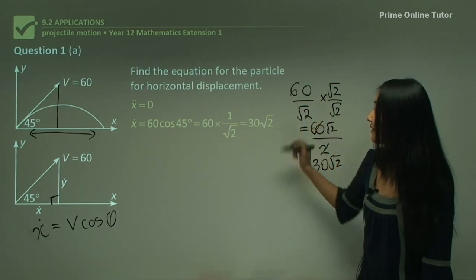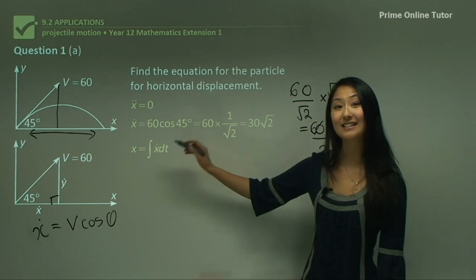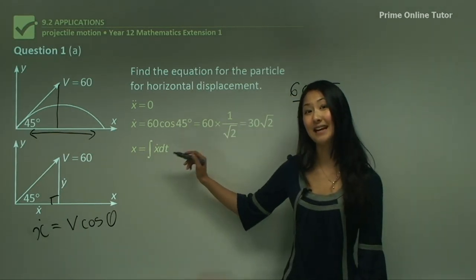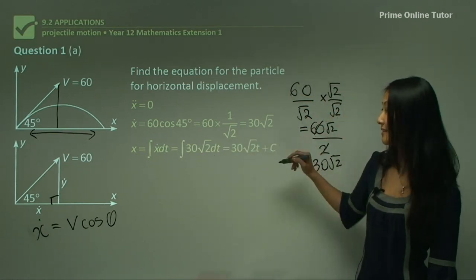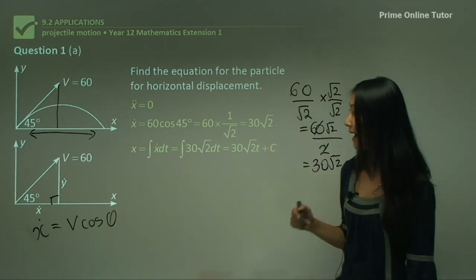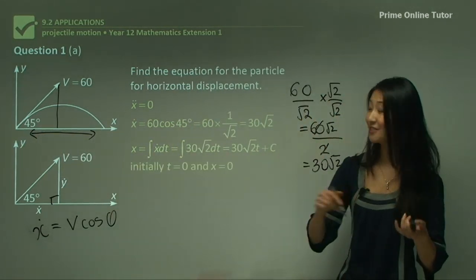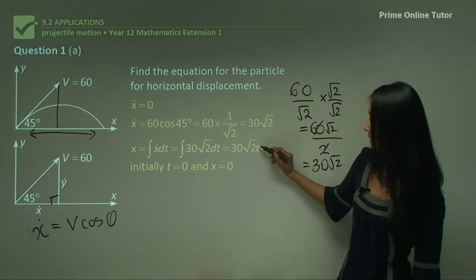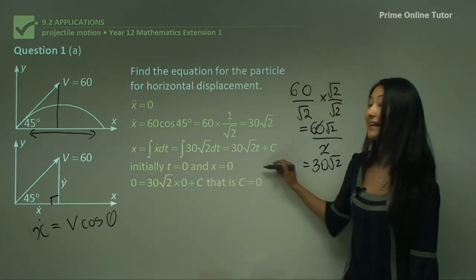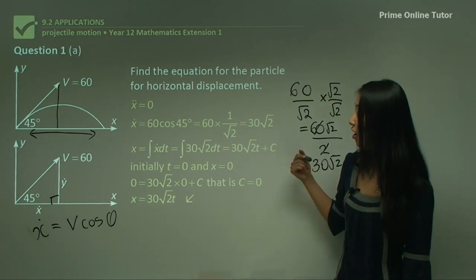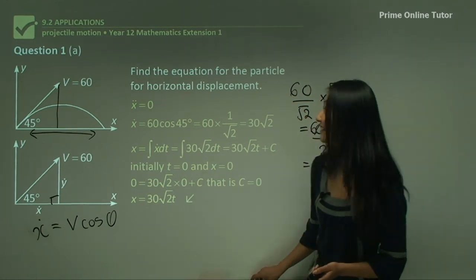Now we integrate the horizontal velocity to get displacement — always in terms of dt. Integrating 30√2 gives 30√2·t + c. To find c, we look at the diagram: when t = 0, x = 0 (starting from the origin). Substituting in: 0 = 0 + c, so c = 0. Therefore the horizontal displacement equation is simply x = 30√2·t.